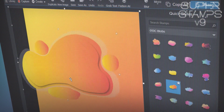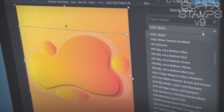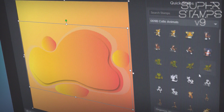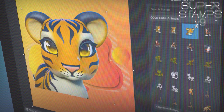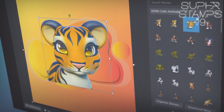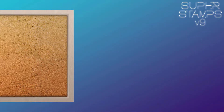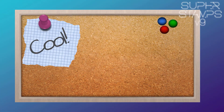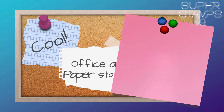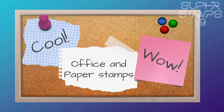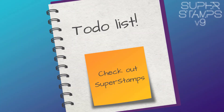Be sure to also check out the Super Stamps page and discover all the rest for yourself — you'll find the link in the description. First up, we have the Office and Paper collection. It includes a number of cork boards in different sizes, as well as different paper notes, sticky notes, notebooks, and accessories like tags and tape.